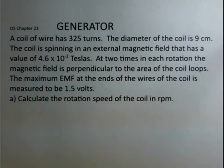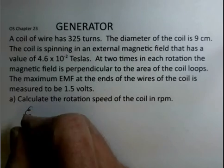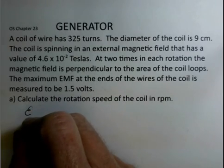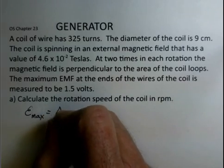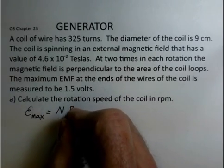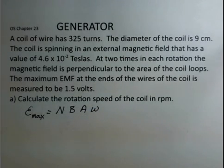Well, we're given that the max EMF is 1.5 volts. So in your book, you probably will locate this formula. The EMF max is equal to the number of turns of wire, the magnetic field, the area, and the rotation speed in radians per second.